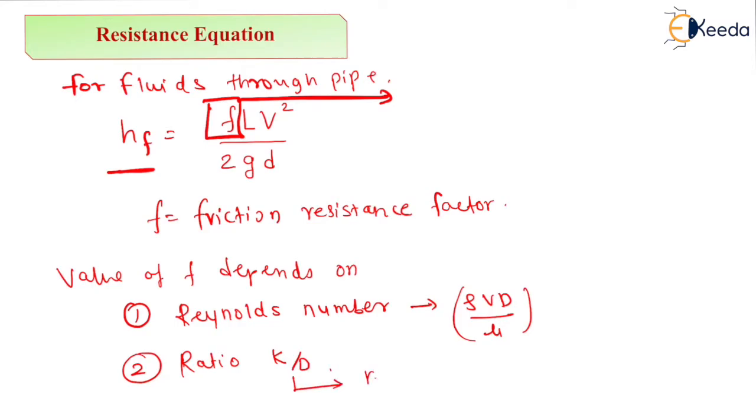And secondly, the ratio k divided by D. So k divided by D is nothing but the relative roughness. Basically, calculation of F depends on these two factors: Reynolds number Re and k upon D.